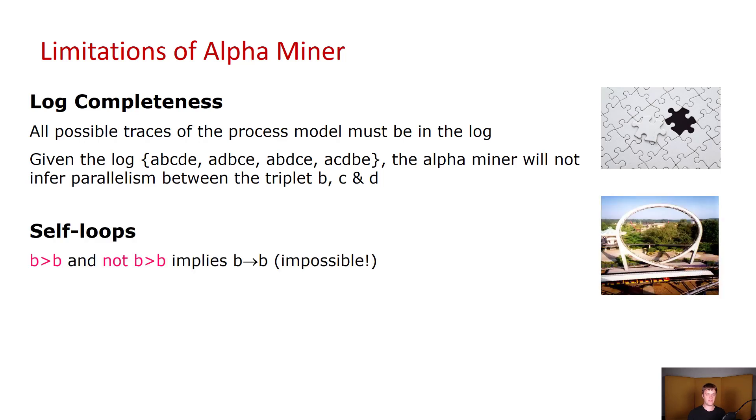Then it can't deal with self loops, that is B followed by B followed by B. In fact, if you have a trace saying A, B, C, and another trace saying A, B, B, B, B, B, B, B, C, then the alpha miner is going to consider them as the same trace.